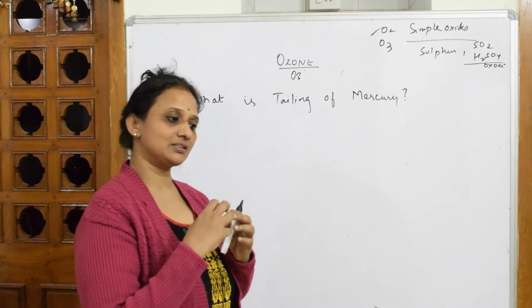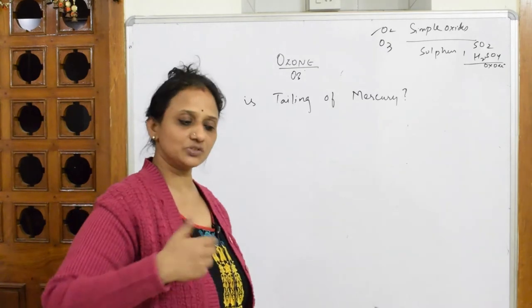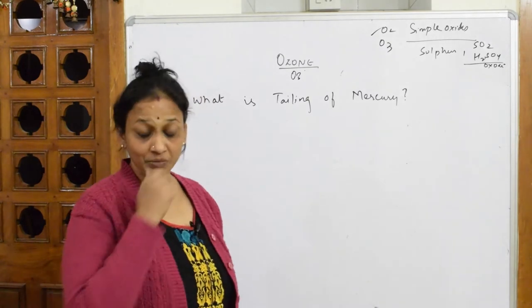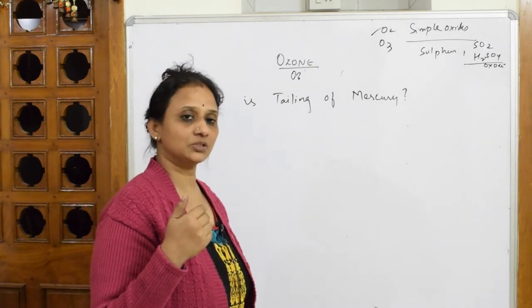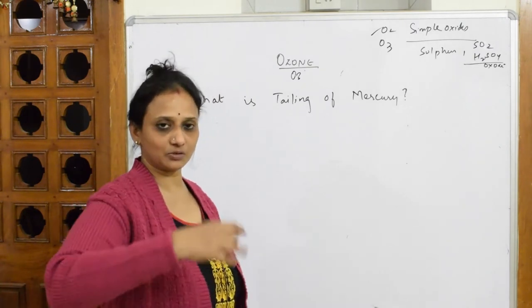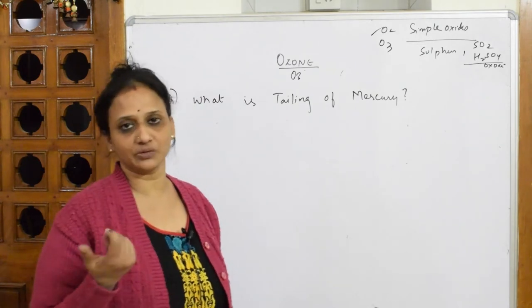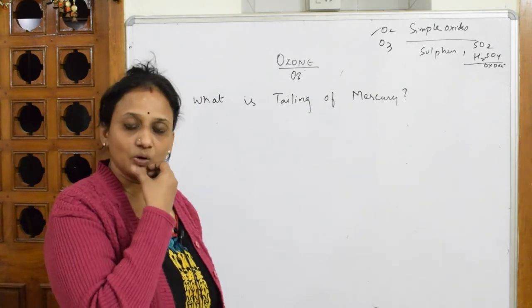The cohesive and adhesive forces between similar and dissimilar molecules cause mercury to hold that property. Wherever it goes, it starts flowing. We call that the meniscus of mercury.